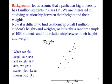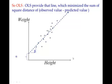Let's have some background. Assume a particular large university which has 1 million students in class 11th. We are interested in studying the relationship between their heights and weights. Since it is difficult to measure all 1 million students, we are going to take a random sample of 1000 students, study their height and weight, and find some relationship between them. When we plot them, the graph looks like what is shown here. Now, what is OLS estimate?